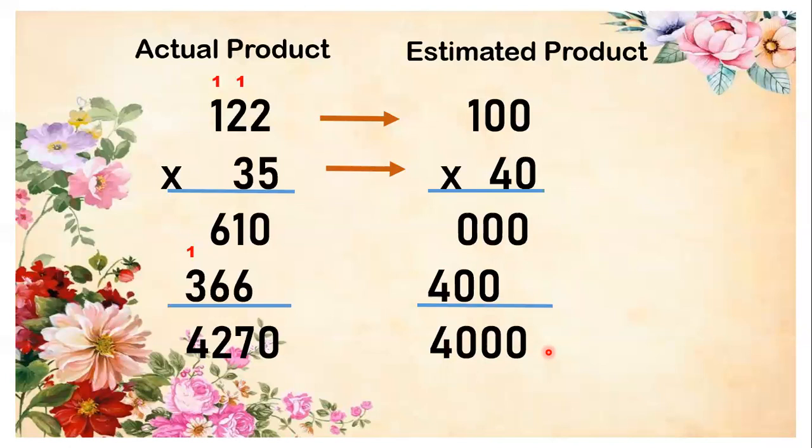So now let's look on the result. In the actual product, we have 4,270. The estimated product is 4,000. As you can see, it is very close to each other. The estimated product is so close to the actual product.